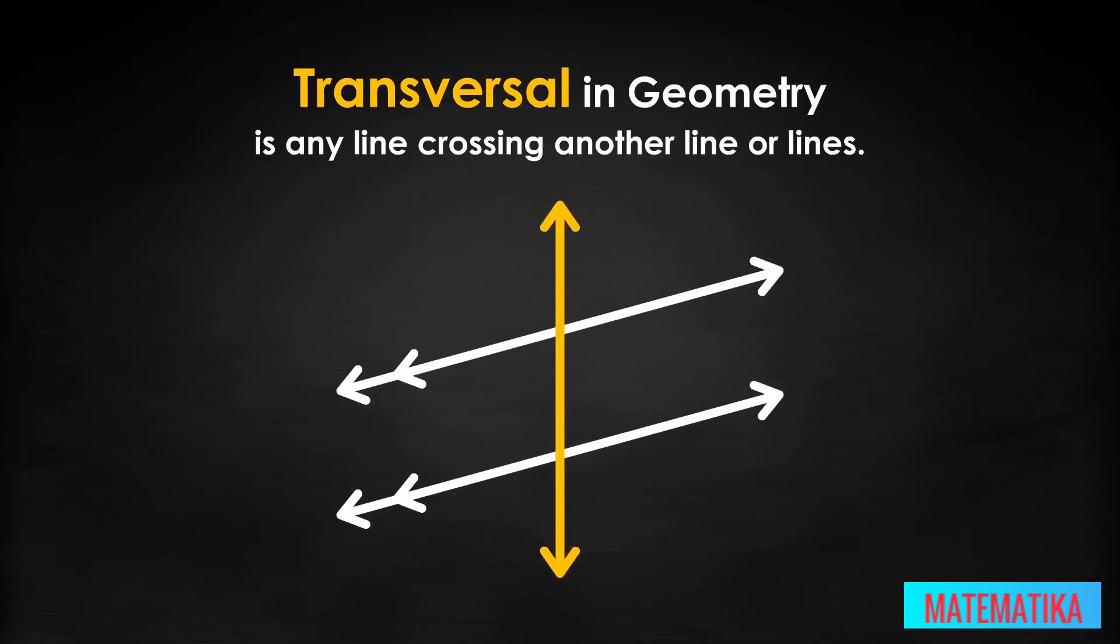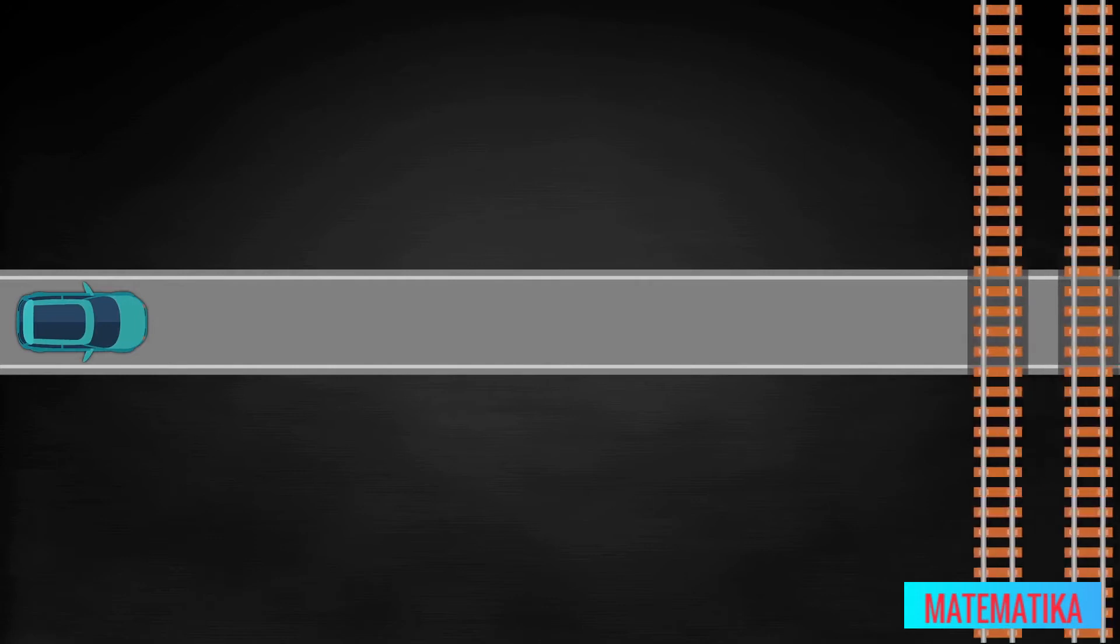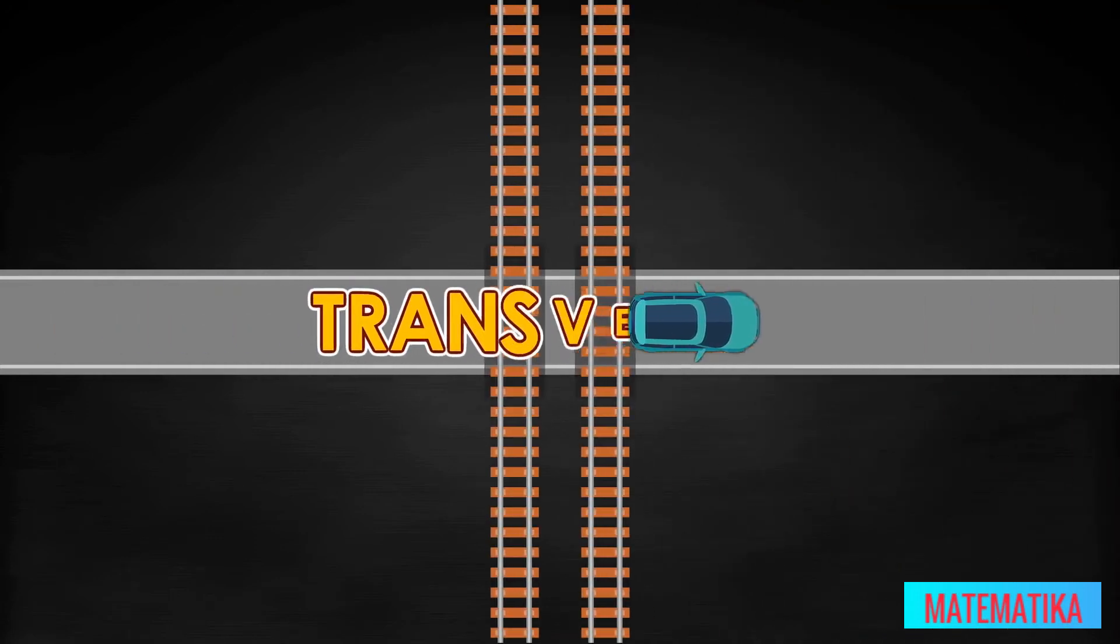When it crosses two parallel lines, the resulting eight angles have interesting properties. You have probably ridden in a car on a street that crossed railroad tracks. As you crossed the tracks, you completed a transversal.